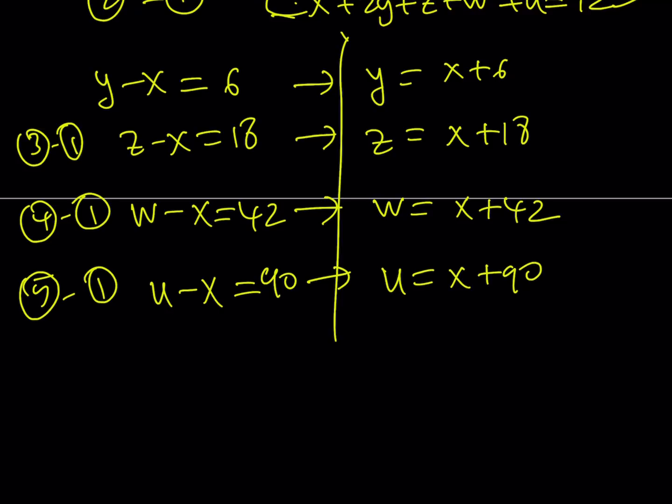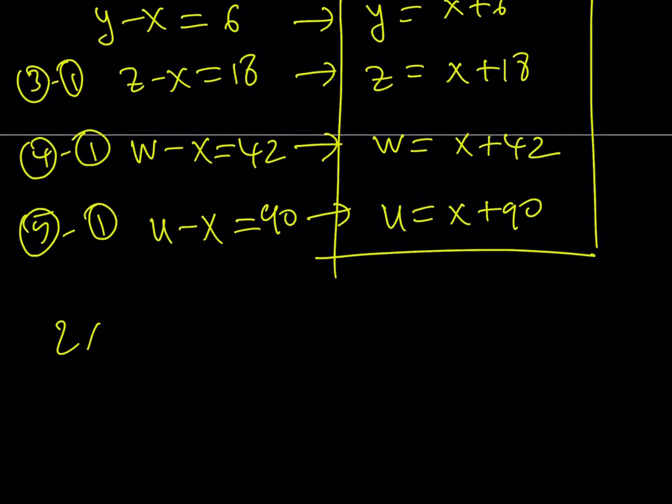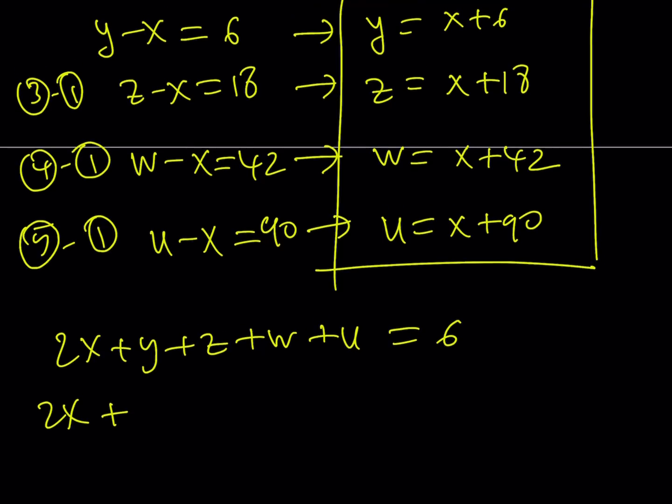So, I got these four equations. I was able to write all of the variables in terms of X, which is cool because now I can use the first equation. Let's go ahead and use it and then finish this up. So, I have 2X plus Y plus Z plus W plus U equals 6. Remember, this is my first equation. And now, I'm going to replace everything with what it is. Y is going to be X plus 6. Z is going to be X plus 18. W is going to be X plus 42. And U is going to be X plus 90. And all of this is going to equal 6.